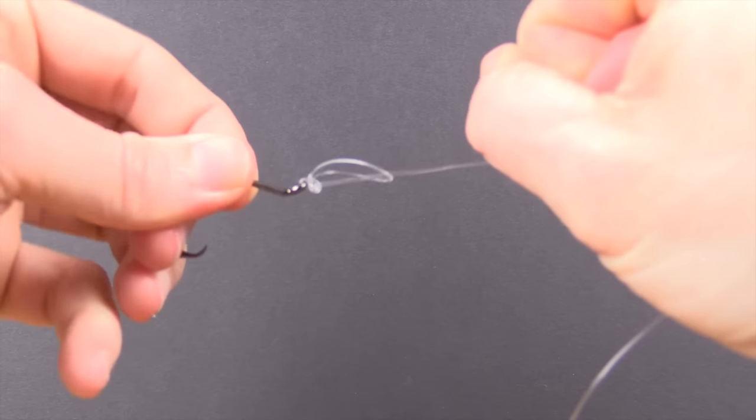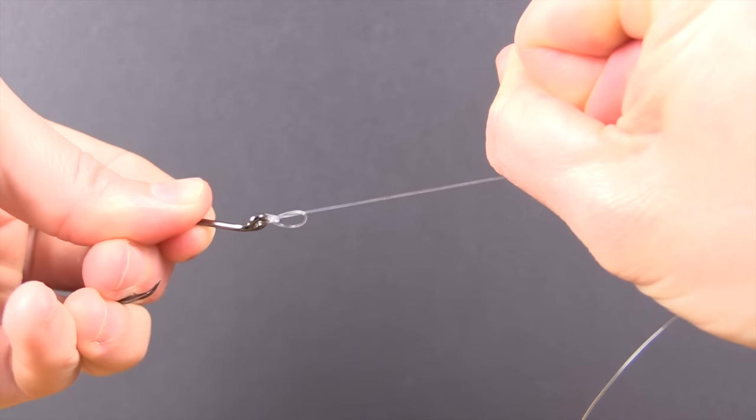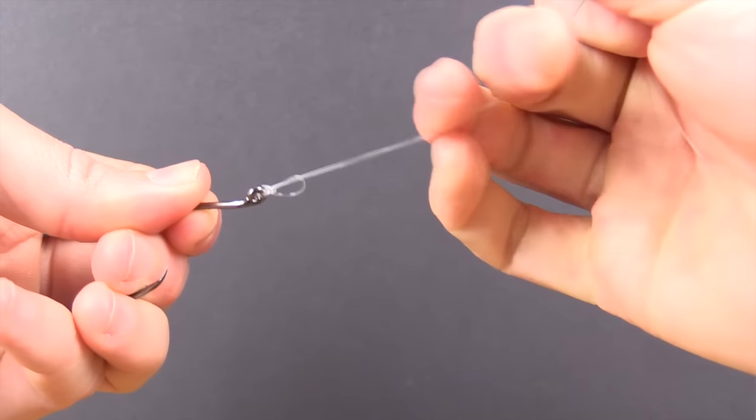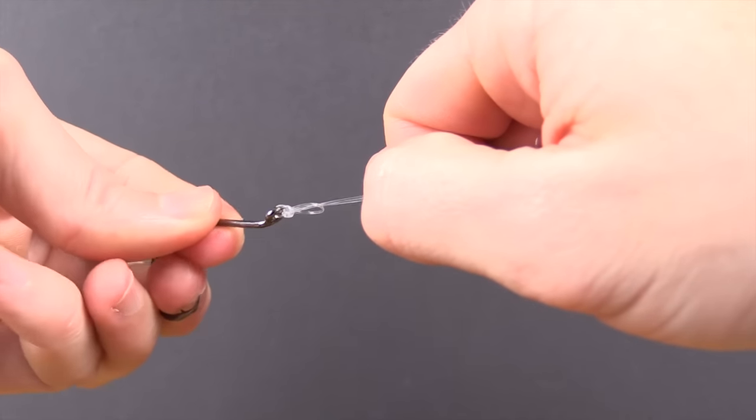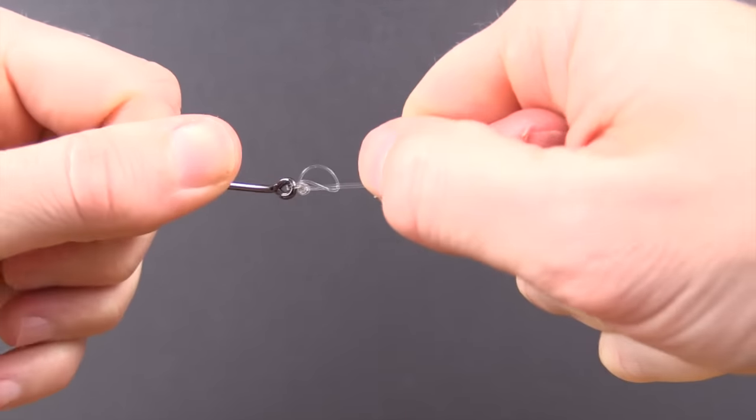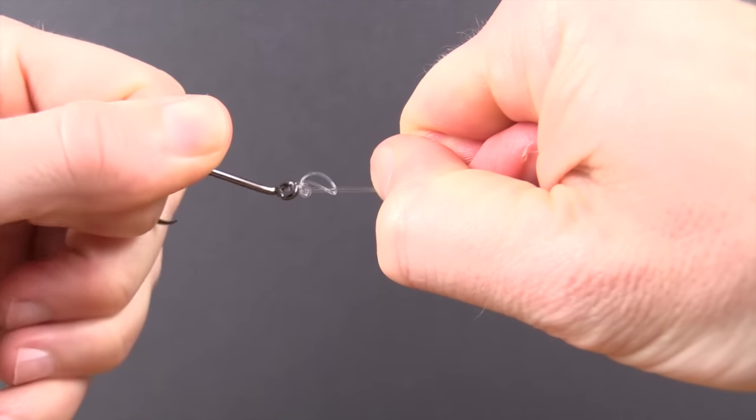It's really simple as just putting pressure on it. Just before doing that, it'd be smart to put some saliva or water on the knot to make sure it doesn't burn itself. But I'm just doing this to show you how to tie the actual knot.